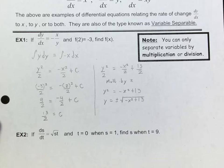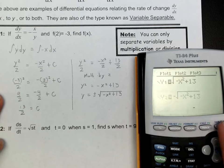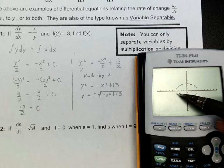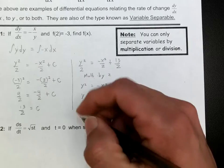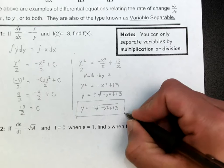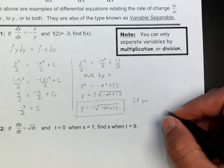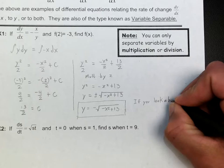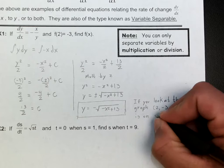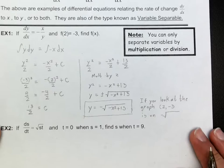I want to make sure I have the equation that contains the point (2, -3). If you graph this on your graphing calculator with y1 as the positive and y2 as the negative square root, you'll notice that the point (2, -3) is actually located on the negative square root. So my answer is y is equal to negative square root of negative x squared plus 13.